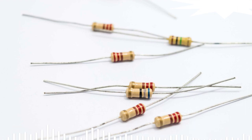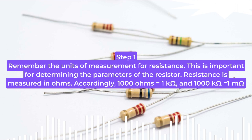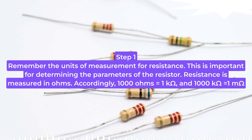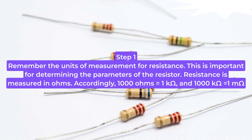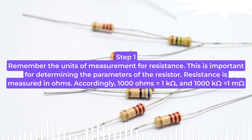Step 1: Remember the units of measurement for resistance. This is important for determining the parameters of the resistor. Resistance is measured in ohms. 1000 ohms equals 1 kΩ, and 1000 kΩ equals 1 MΩ.